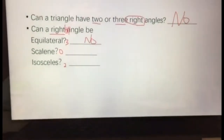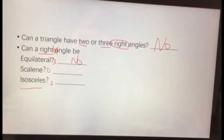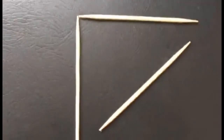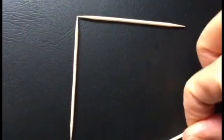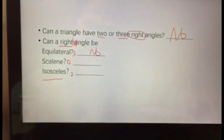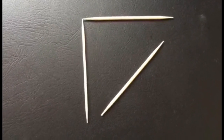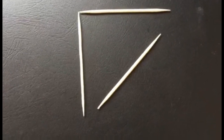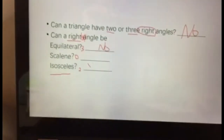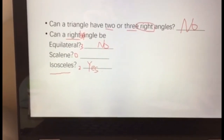Can a right triangle be isosceles? In order to be isosceles, the triangle has to have two equal sides. We already have two equal sides and just need a third, longer side — and it makes an isosceles right triangle. So yes, a right triangle can be isosceles — it can have two equal sides.